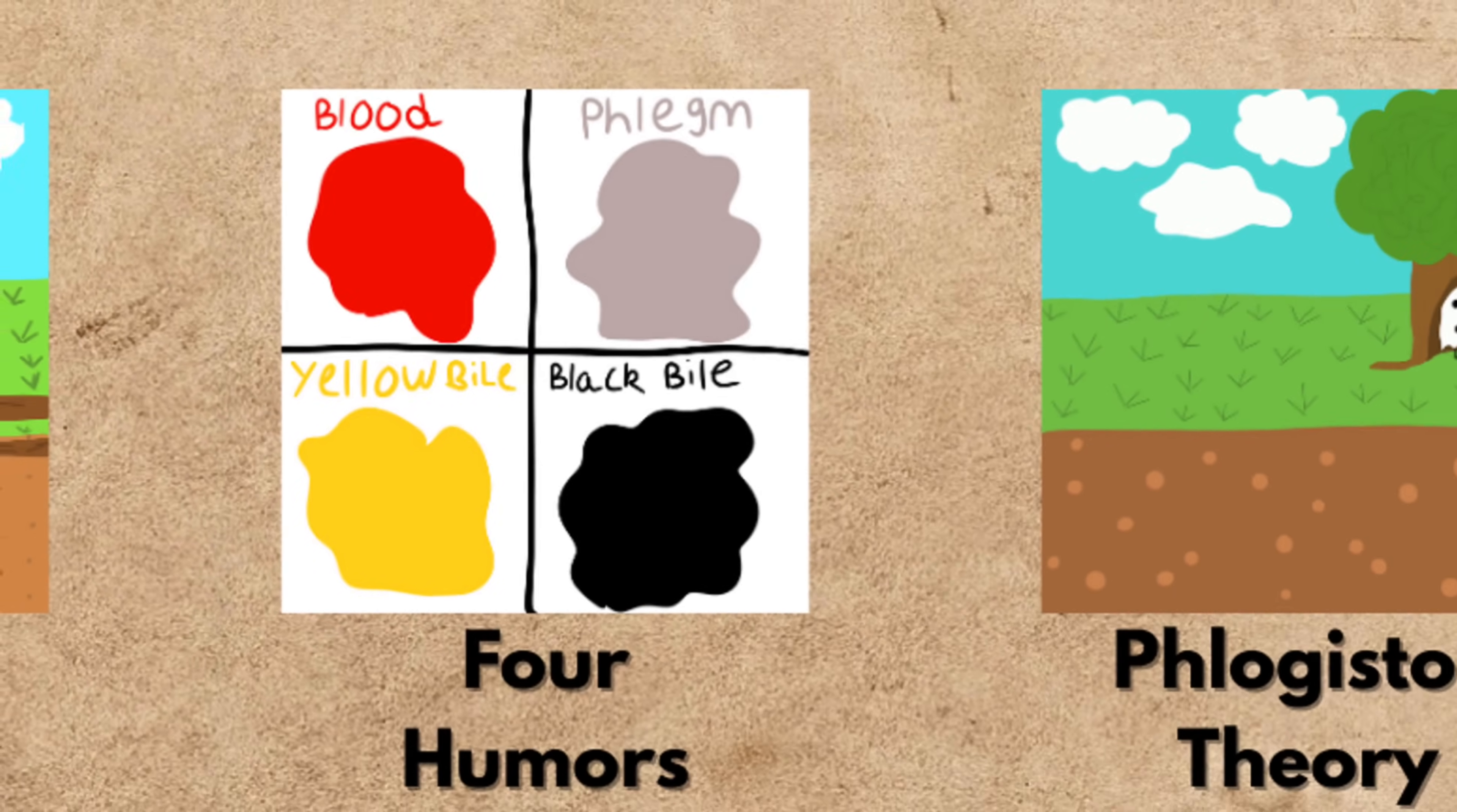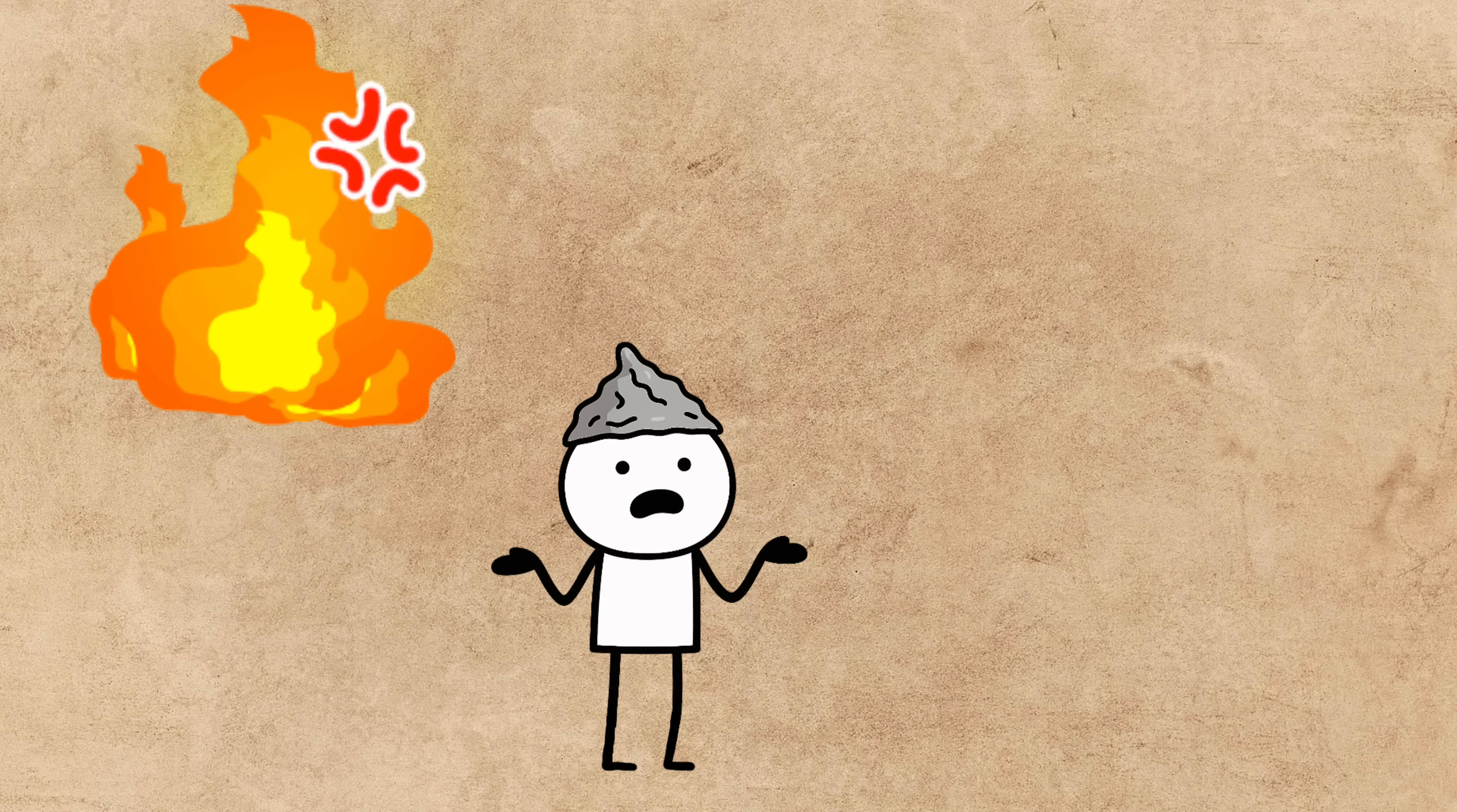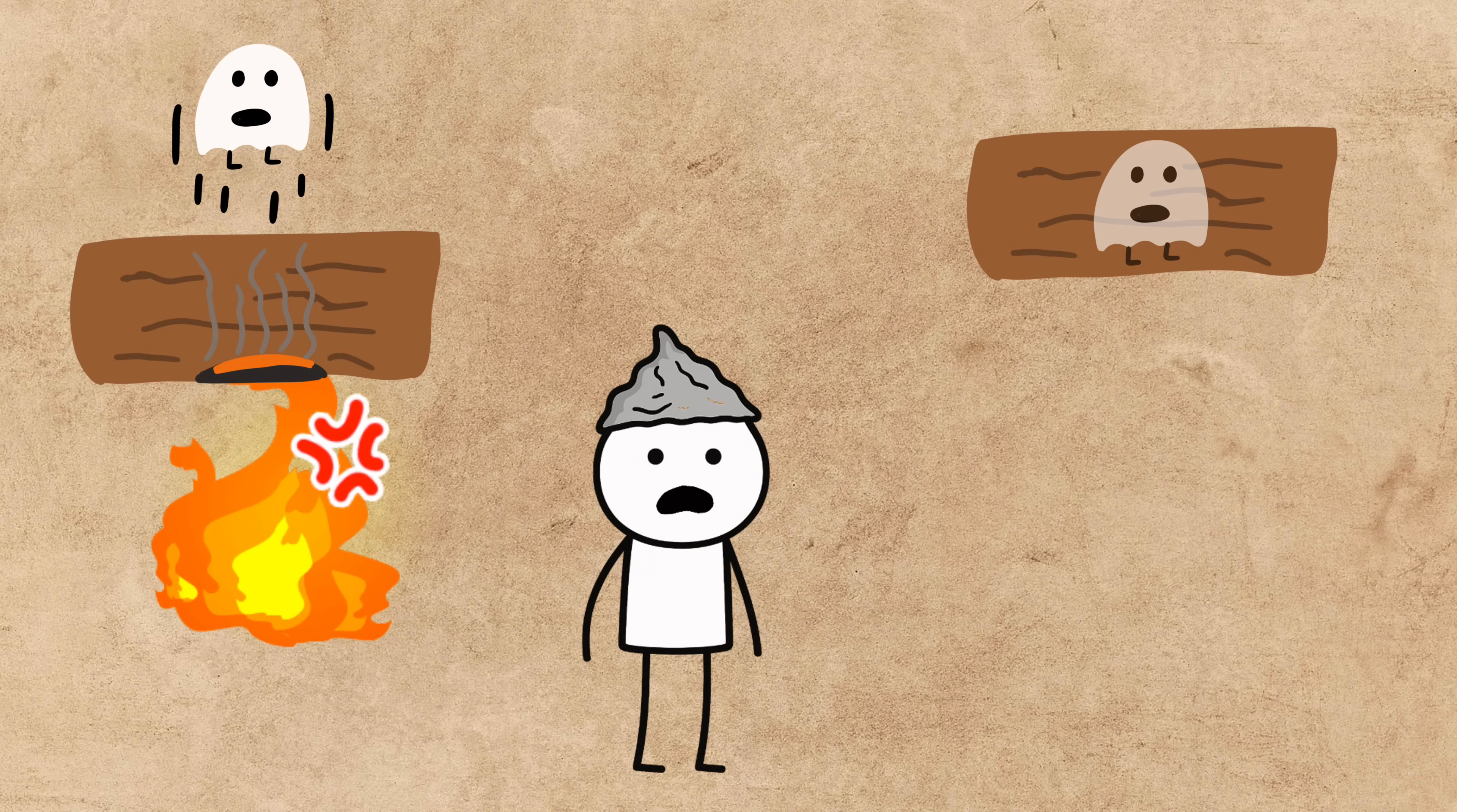Our fifth strangest theory is about a ghost that lived inside anything that could burn. It's called the phlogiston theory. Back in the 17th and 18th centuries, scientists were trying to answer a basic question: Why do things burn? The leading explanation was that combustible materials contained an invisible, odorless, and weightless substance called phlogiston, basically the element of fire. When you burned wood, you weren't destroying it. You were just releasing its phlogiston into the air. What was left behind was the de-phlogisticated substance, or ash.